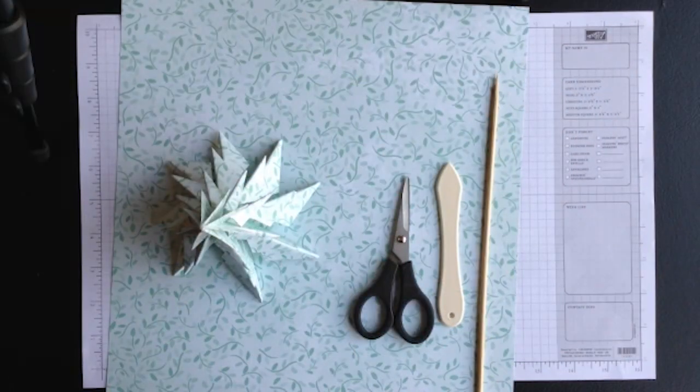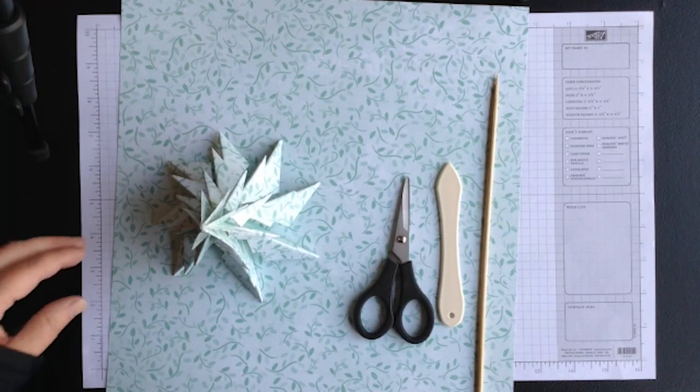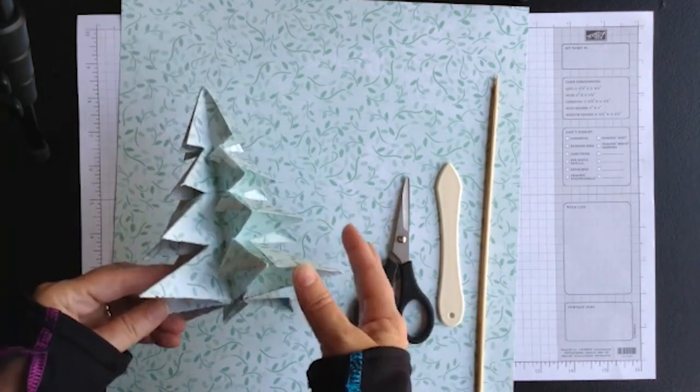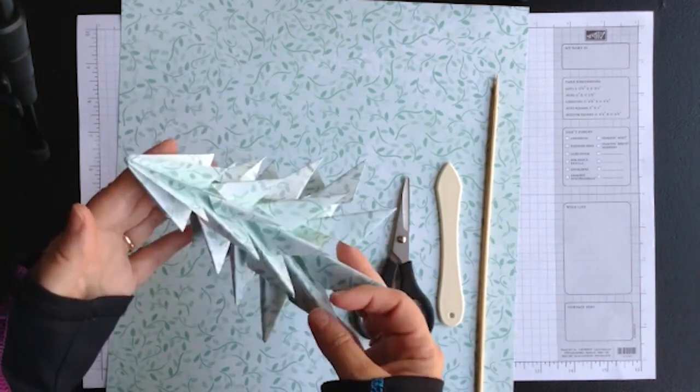This is Betty Traciak from kittystamp.blogspot.com. Today I have a tutorial for making an origami Christmas tree.